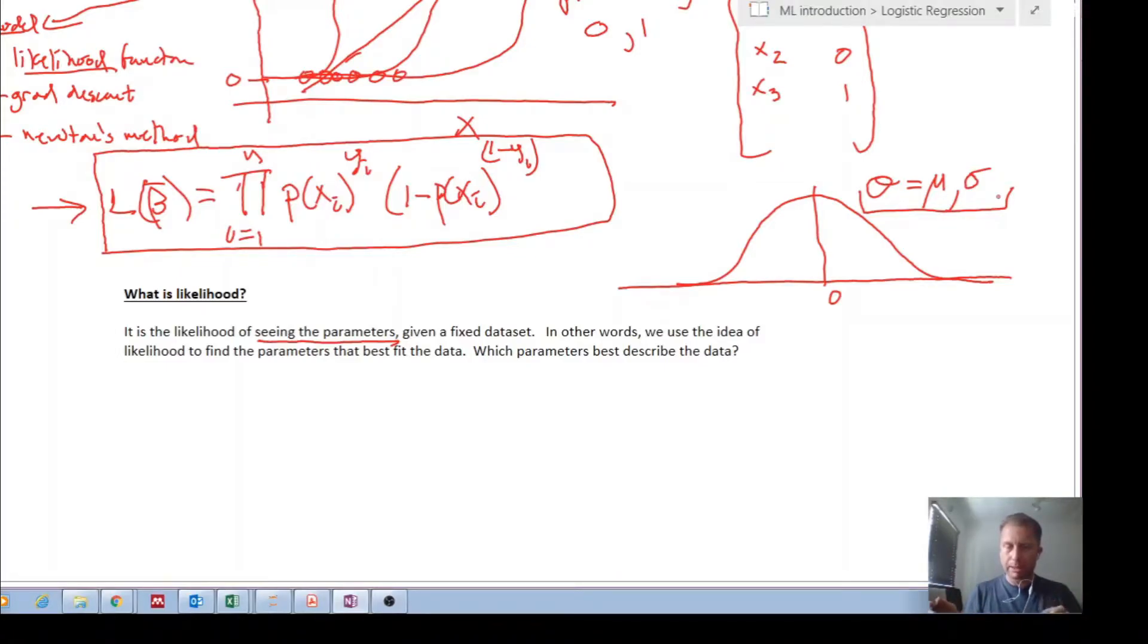Likelihood is the reverse. Say now you have a fixed data set that you've actually measured. What we're trying to do now is find the parameters that best describe that data set.